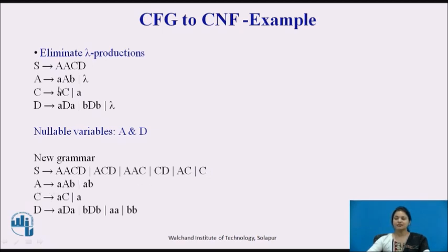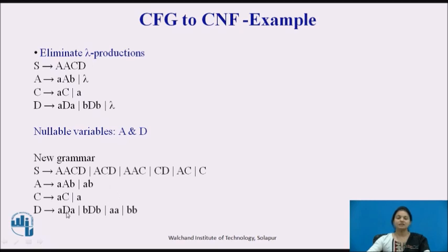For A producing AAB: when A is null we get AB. AC remains as is. For D producing ADA: setting A to null gives D; setting D to null gives AA; and for BDB: setting D to null gives BB. The new grammar is produced by eliminating these null variables.